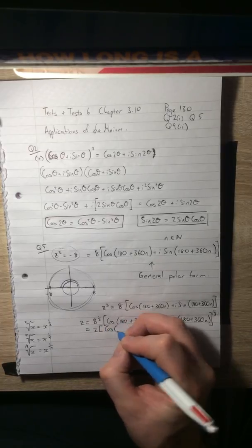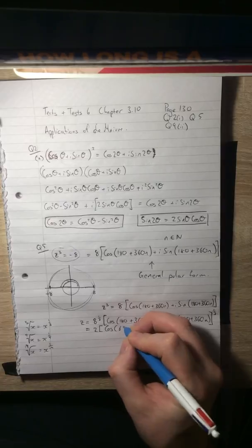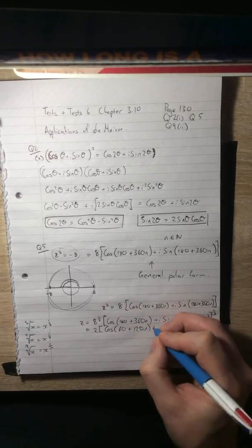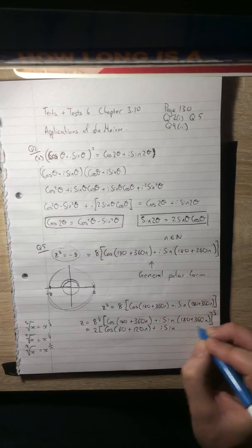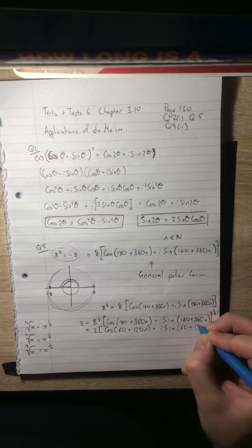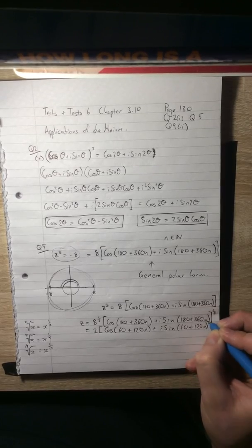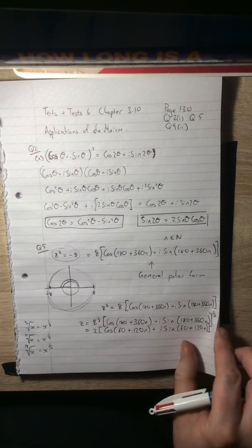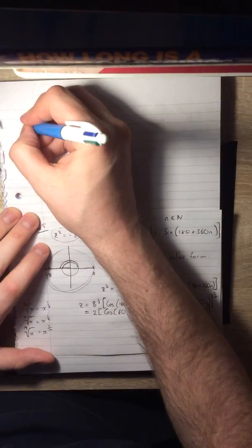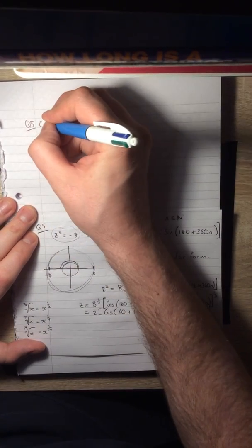De Moivre now says multiply the arguments by 1/3. So that's going to become cos of, well, a third of 180 is 60, plus 120n, plus i sin, a third of 180 is 60 again, a third of 360 is 120n. So there's our expression for z. I'm going to move on to the next page here. This is question five continued.